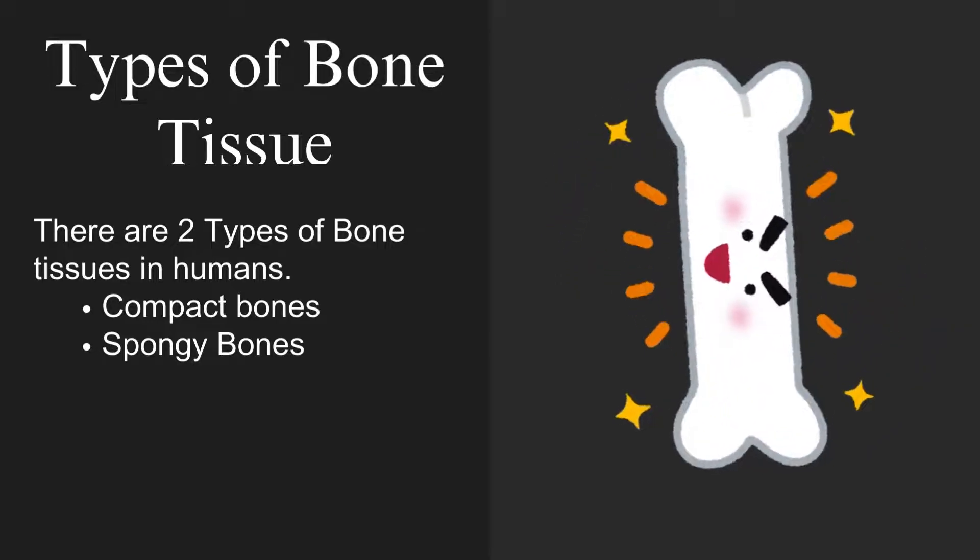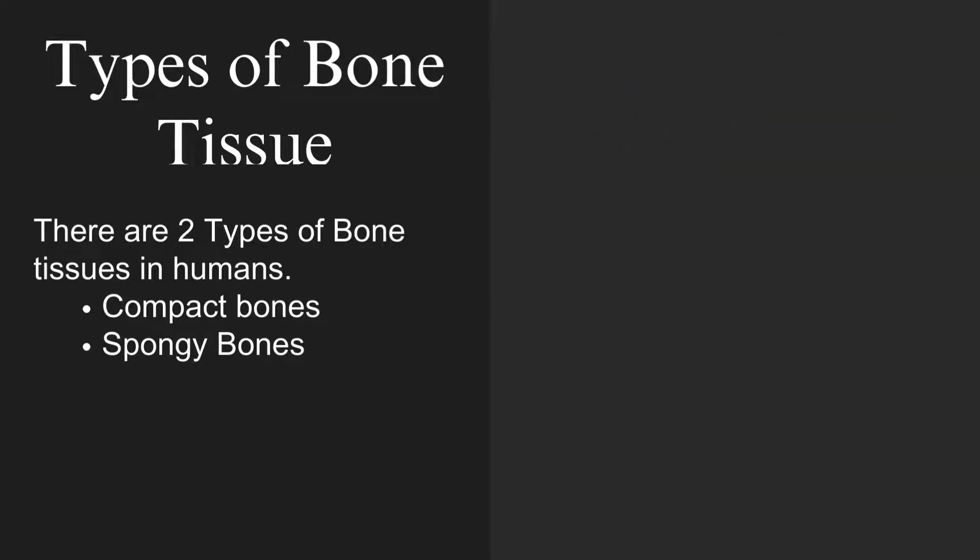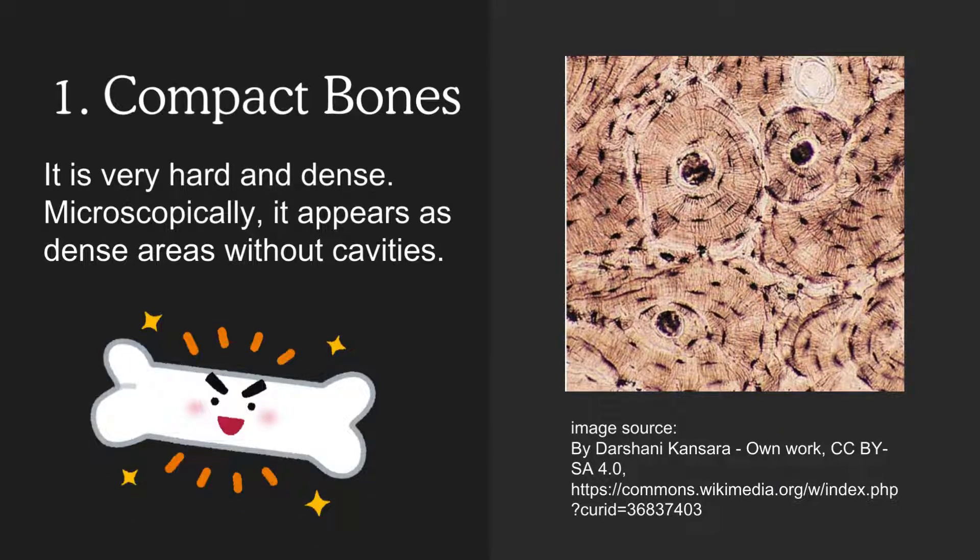Types of bone tissue. There are two types of bone tissues in humans: compact bones and spongy bones. First, we will talk about compact bones. It is very hard and dense. Microscopically, it appears as dense areas without cavities.